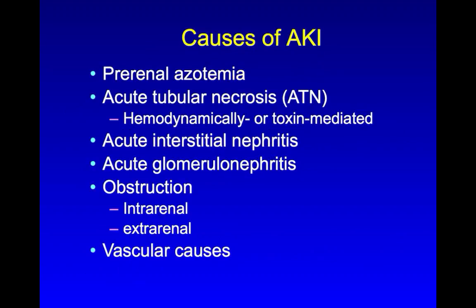Here are some common causes of AKI. Although they are distinct clinical and histologic entities, they can all lead to the same final common endpoint of an acutely elevated BUN and creatinine. The majority of cases of AKI are going to fall into these first two categories: pre-renal azotemia and acute tubular necrosis that is hemodynamically or toxin-mediated. But remember that there are other causes, and unless you think of them, you may miss the diagnosis. So let's do a quick overview of them.